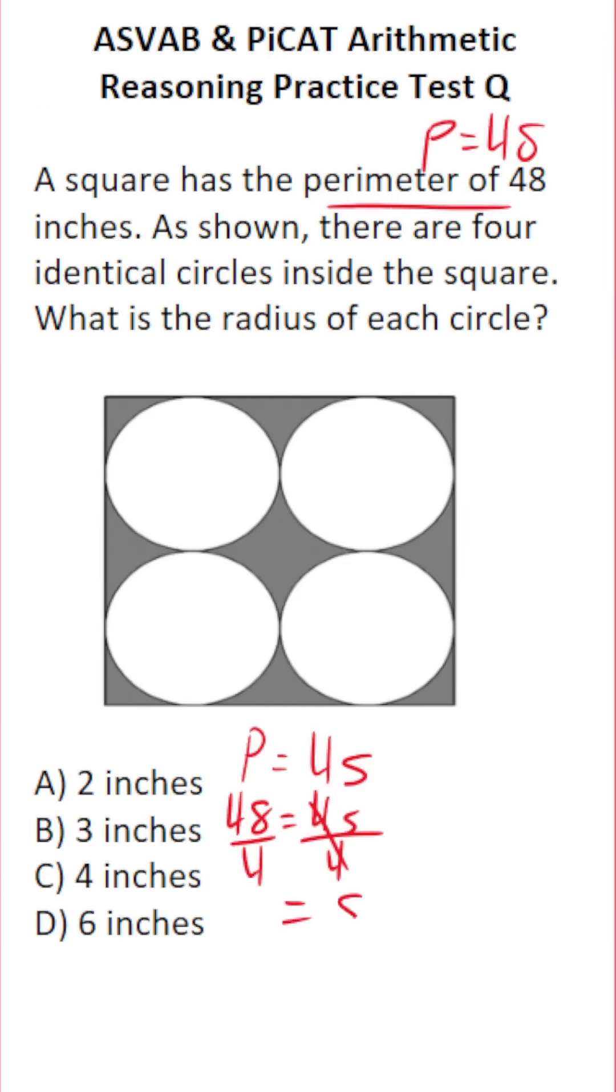In doing so, this crosses out, leaving you with S over here. What is 48 divided by 4? This is very easy to do mentally. 4 divided by 4 is 1, 8 divided by 4 is 2. So the side length of this square is 12 inches.